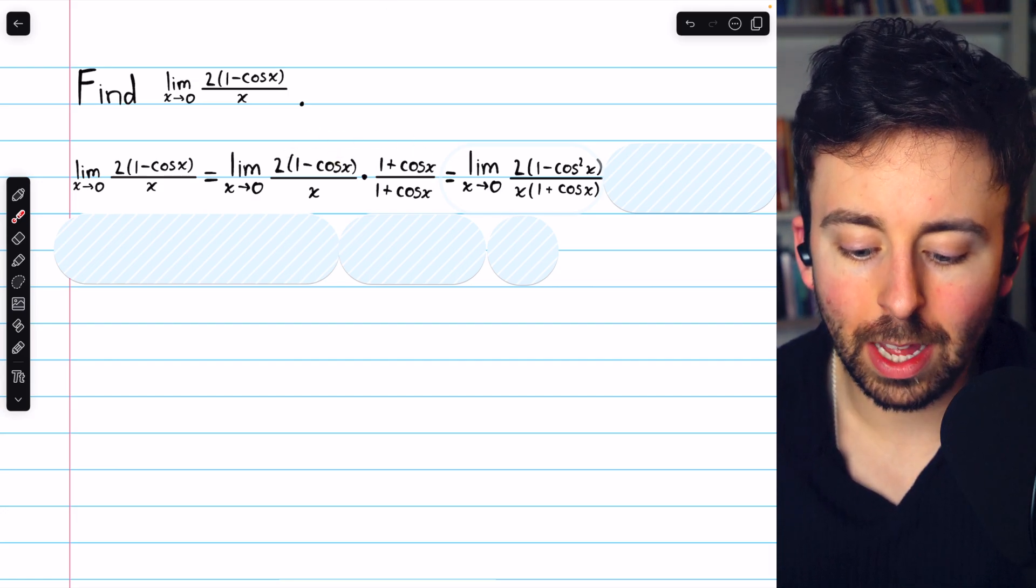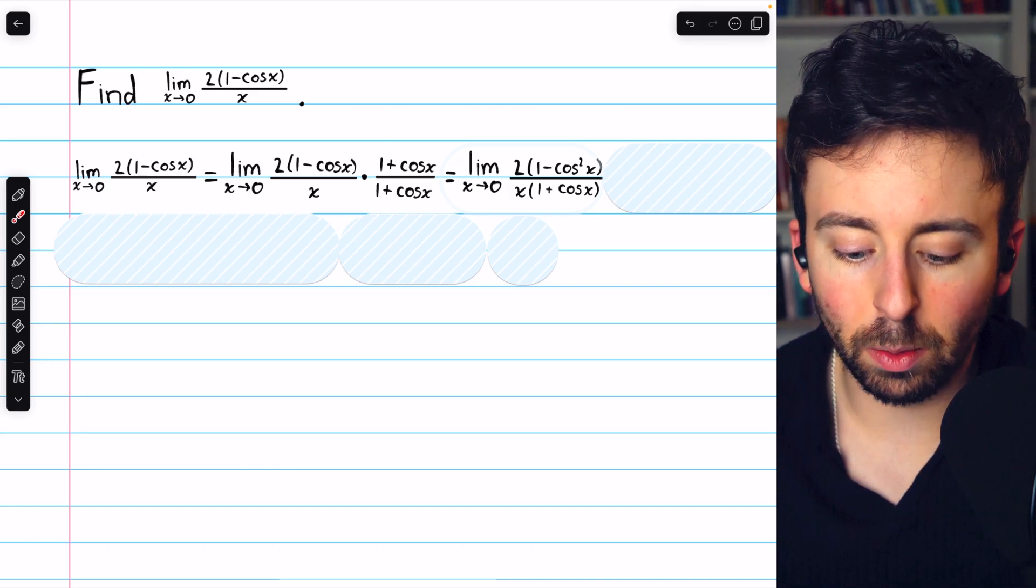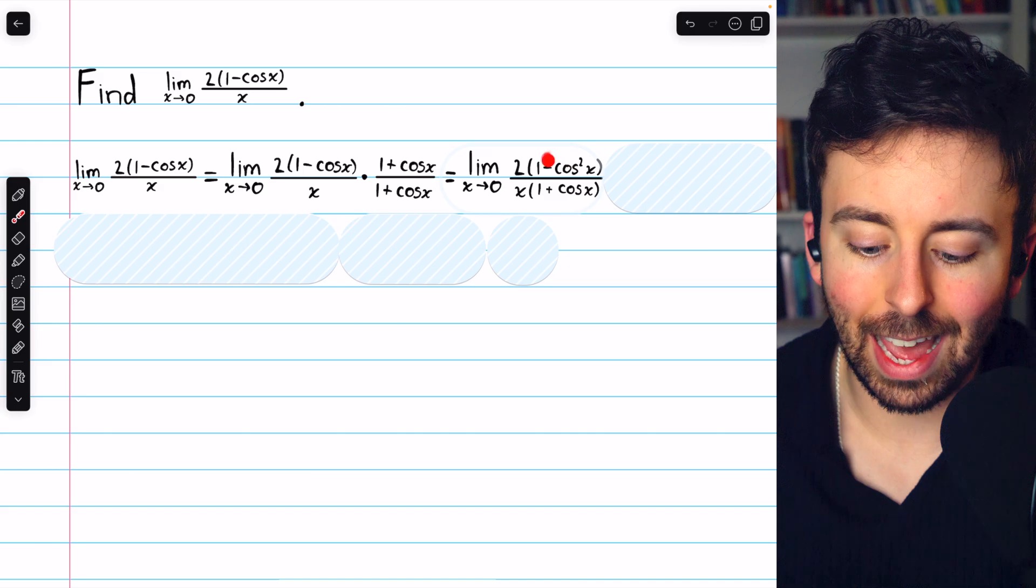If you do this multiplication out, the middle terms will cancel out because of the minus and the plus. And then we'll just be left with 1 squared and minus cosine squared, like that.